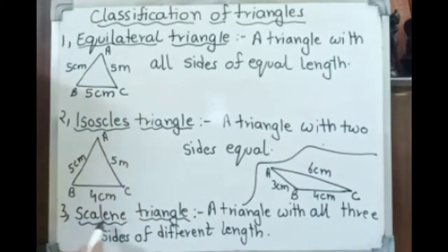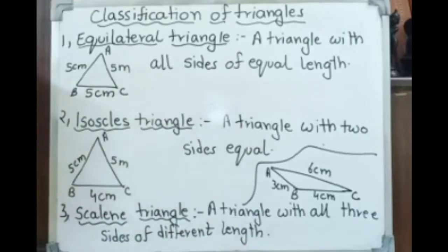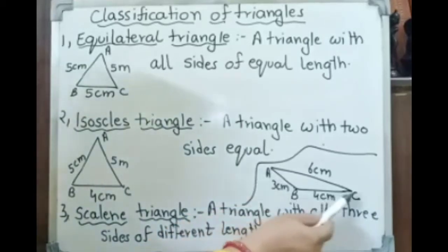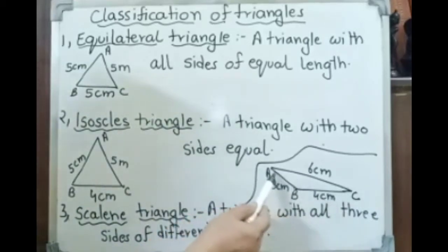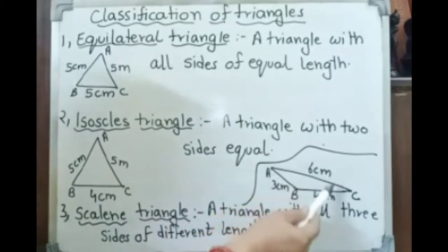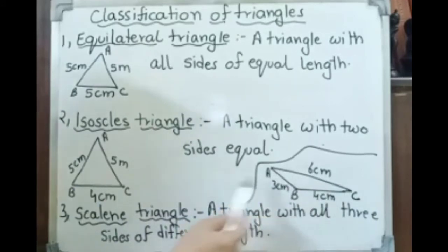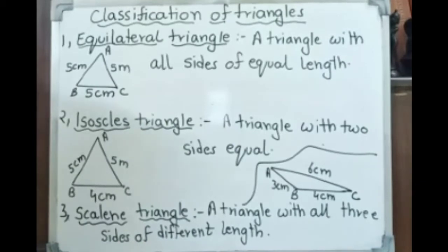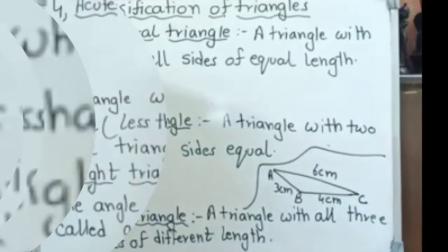The third one is the scalene triangle — a triangle with all three sides of different length. Here we have triangle ABC with vertices A, B, and C. The sides are 6 cm, 4 cm, and 3 cm — all sides are different. That is called a scalene triangle.